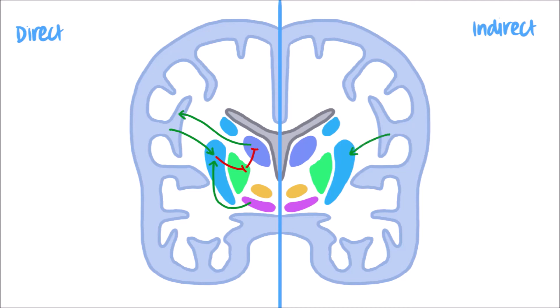For the indirect pathway, the motor cortex stimulates the striatum as well. However, this time the striatum sends inhibitory impulses to the external globus pallidus, which normally inhibits the subthalamic nucleus. This allows less inhibition of the excitatory impulses sent from the subthalamic nucleus to the internal globus pallidus, which in turn promotes the inhibition of the thalamus. This decreases the excitatory impulses sent back to the cortex by the thalamus. Dopamine released from the substantia nigra can inhibit the indirect pathway to promote movement.